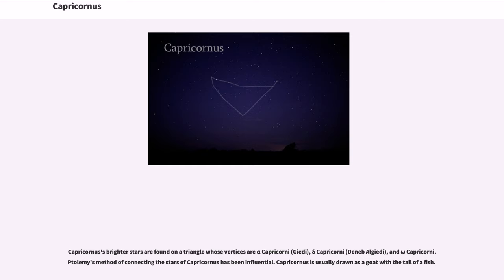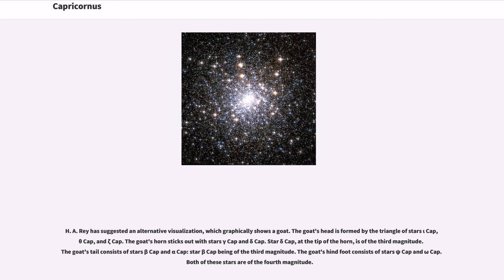Capricornus is usually drawn as a goat with the tail of a fish. H.A. Ray has suggested an alternative visualization, which graphically shows a goat. The goat's head is formed by the triangle of stars Iota Cap, Theta Cap, and Zeta Cap. The goat's horn sticks out with stars Gamma Cap and Delta Cap. Star Delta Cap, at the tip of the horn, is of the third magnitude. The goat's tail consists of stars Beta Cap and Alpha Cap, star Beta Cap being of the third magnitude. The goat's hind foot consists of stars Psi Cap and Omega Cap. Both of these stars are of the fourth magnitude.